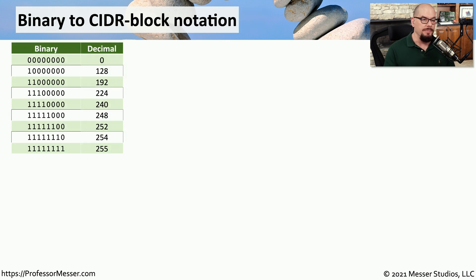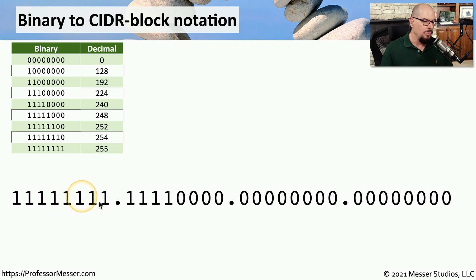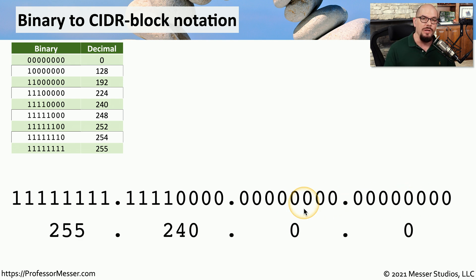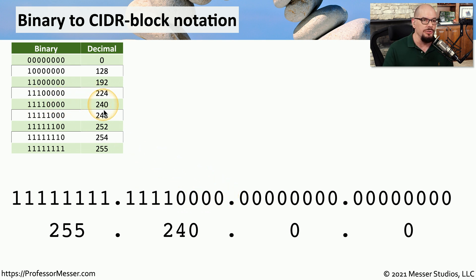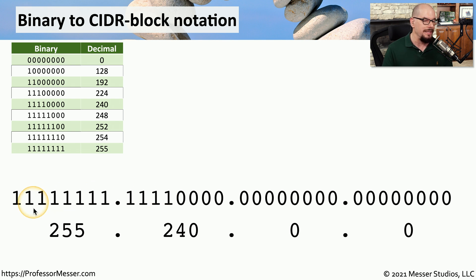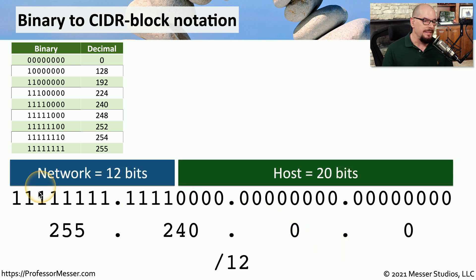Let's perform another subnet mask calculation using our chart for a quick binary-to-decimal conversion. Our subnet mask has all 1s in the first octet, then 1, 1, 1, 1, 0, 0, 0, 0 in the second octet, and the last two octets are all 0s. Looking at our chart, all 1s converts to a decimal 255, and 1, 1, 1, 1, 0, 0, 0, 0 converts to 240. That means this subnet mask written in decimal is 255.240.0.0. Counting the number of 1s, there are 12, so this subnet mask can also be written as a slash 12, with 12 network bits and 20 host bits.